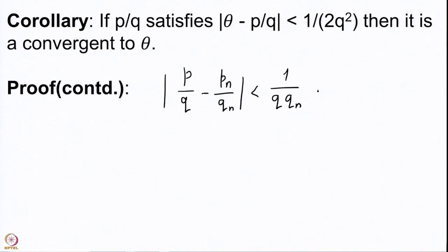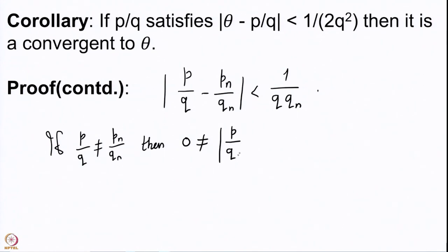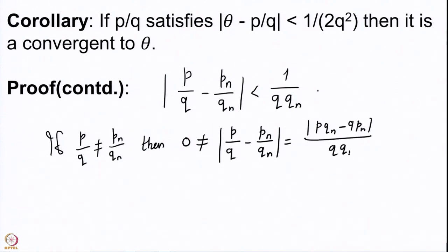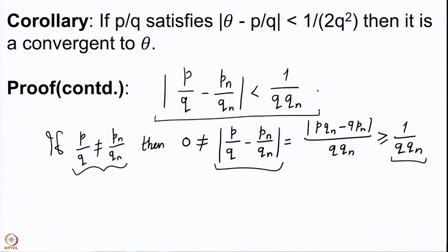But this is a contradiction: if p/q ≠ p_n/q_n, then the difference is not zero. The numerator p·q_n − q·p_n is a nonzero integer, so |p/q − p_n/q_n| = |p·q_n − q·p_n|/(q·q_n) ≥ 1/(q·q_n). But we proved the difference is strictly less than 1/(q·q_n). Hence p/q must equal p_n/q_n.